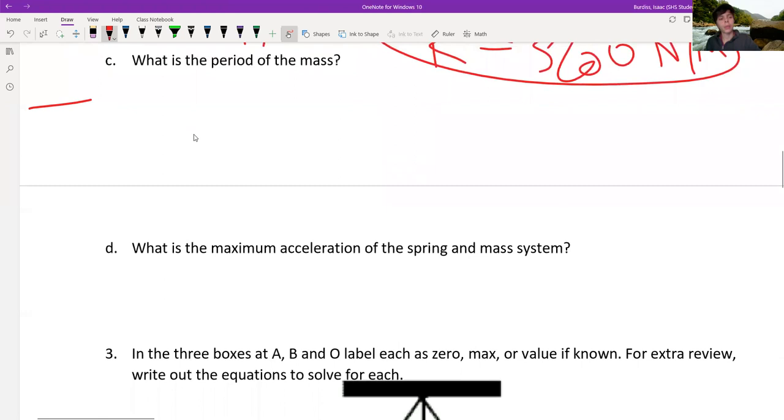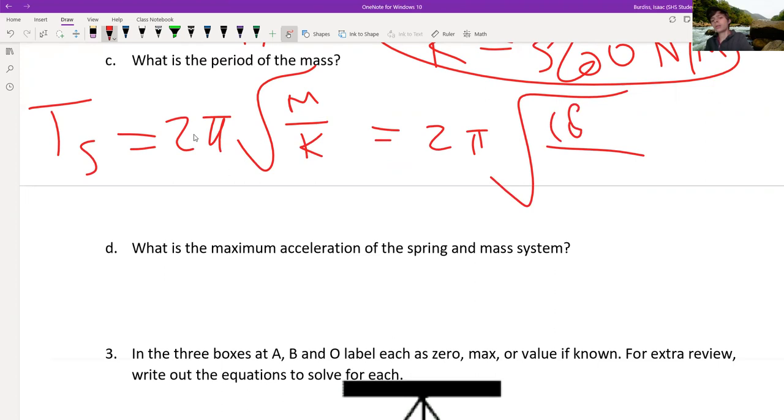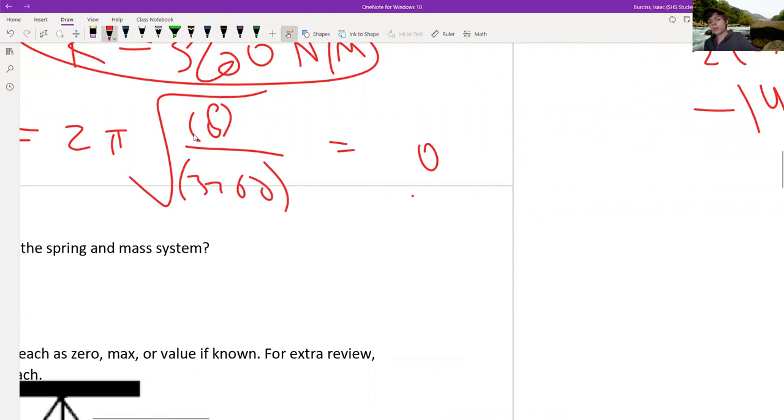What's the period? All right. It's the spring. That is 2π over the square root of mk. M divided by k. So 2π, and then we have the m which is 8, divided by 3200. When you do that, you get approximately 0.314 seconds. Period is in seconds.